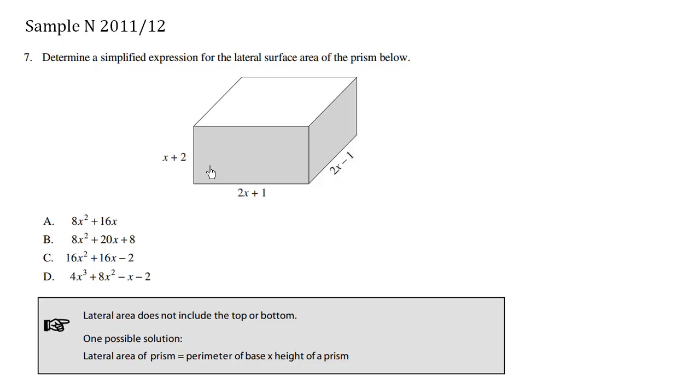And we have the perimeter of the base. We have 2x plus 1, we have 2x minus 1, and then we have 2x plus 1 on the back, this little back here, as well as we have 2x minus 1 on this side over here, hiding behind this box.